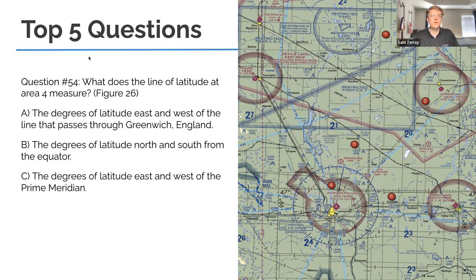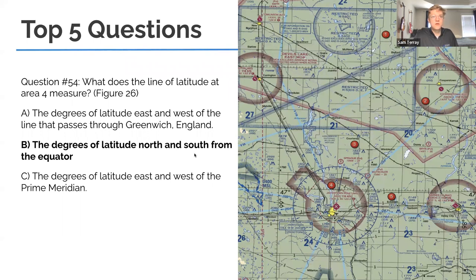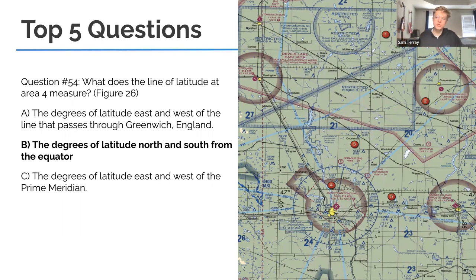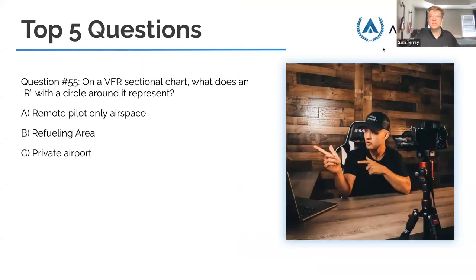Question 54: What does a line of latitude in Area 4 measure? The answer is B — north and south from the equator. Remember: latitude means ladder, and you climb it north and south. Even though the line goes horizontally, you're measuring north-south distance from the equator.